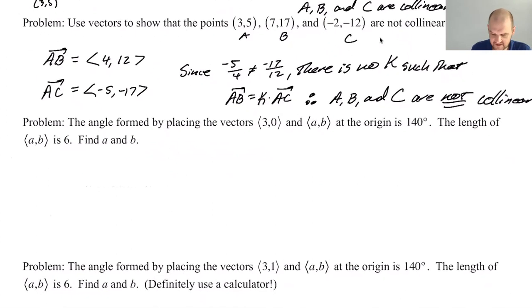You know, we have a lot of technology things that we can try to use to help us. So it's not always diving in with this giant algebraic thing, let the calculator do it for you, whatever. Let's take a look at the next one. So the angle formed by placing the vectors (3,0). So that's key. This is a well-defined vector (3,0) and (a,b). So a,b we don't know necessarily at the origin is 140 degrees. Okay. But then the length of a,b is six. Find a and b. I think we can definitely do this.